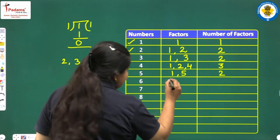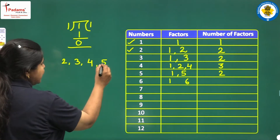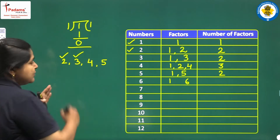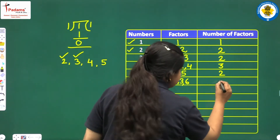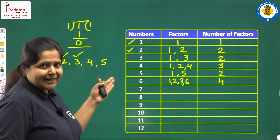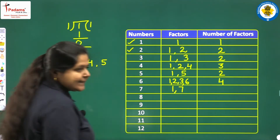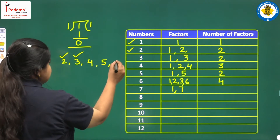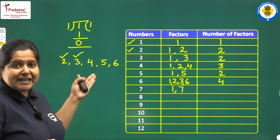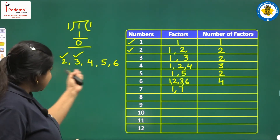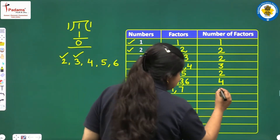We move on to 6. 1 is its factor and 6 is its factor. In between we have 2, 3, 4, and 5. Since 6 comes in the table of 2 and 3 also, 2 and 3 will divide 6 completely and are also factors of 6. So we have 4 factors of 6. Clearly, 4 and 5 will not divide 6 completely. Then we move on to 7. 1 is a factor of 7 and 7 will be a factor of itself. In between we have 2, 3, 4, 5, 6 — does 7 come in the table of any of these? No. So all these numbers will not be factors of 7, and there are only 2 factors of 7.